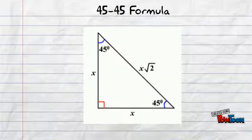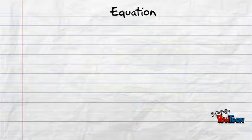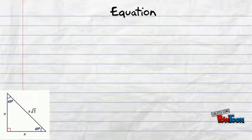Now, let's move on to 45, 45 triangles. The formula is simpler than that of the 30, 60 triangle. Both legs on the 45, 45 triangle are the same length. Therefore, they have the same x value. To find the hypotenuse, you multiply the x value by square root 2. Let's do another equation using this rule.